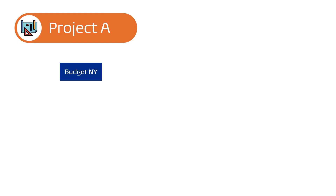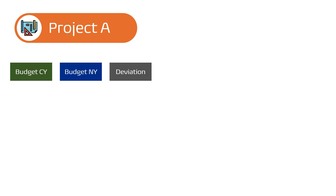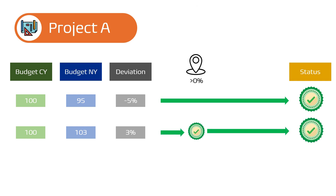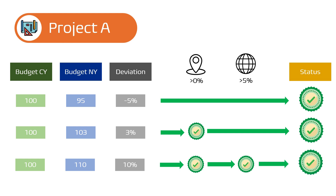Let's assume we are dealing with a situation where budgets for the next year need to be requested by project managers. Here we have a budget request for project A. In our example the structure of the approval process depends on the percentage deviation of the next year budget compared to the current year. The current year budget for our project A equals 100. If the next year budget is lower than the current year then the deviation is below 0%, meaning no further approval is required and the budget is approved by default. If the deviation is between 0% and 5% then local approval is necessary before the budget is accepted. In the third scenario, if the deviation is higher than 5%, not only local but also global approval is required before the project is accepted.